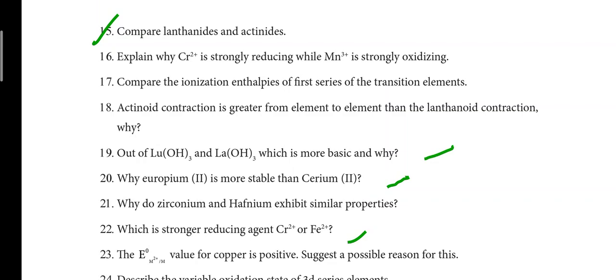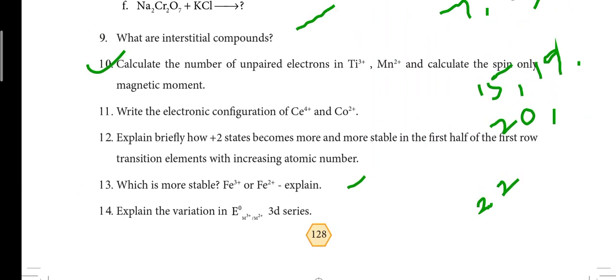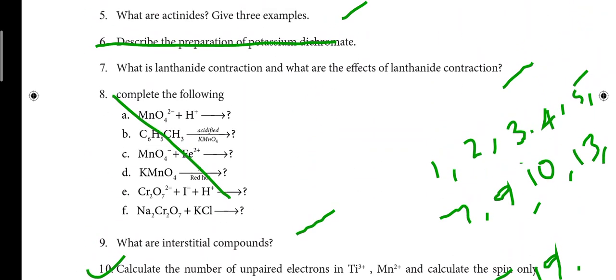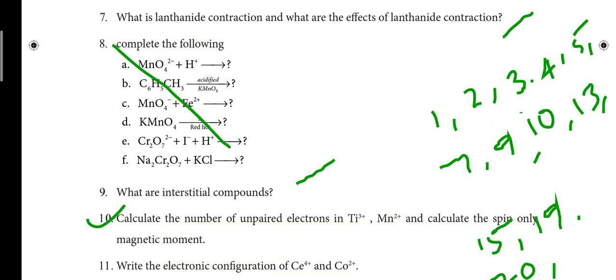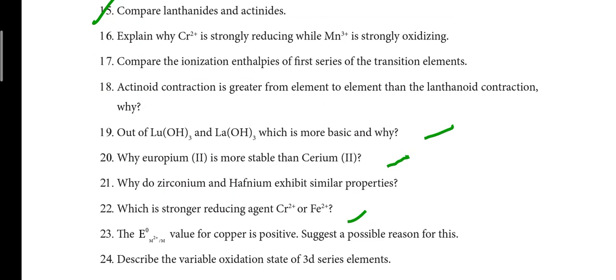The 19th question: out of Lu(OH)₃ and La(OH)₃, which is more basic and why? That is very important. The 20th question: why is Eu²⁺ more stable than Ce²⁺? The question asks which is more basic, which is a stronger reducing agent — that question is a little bit important.